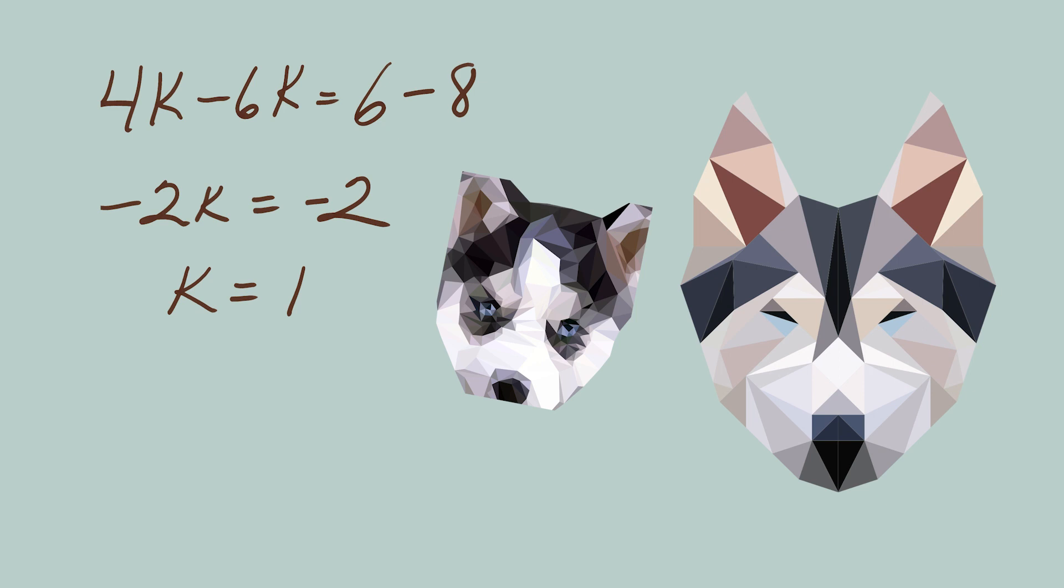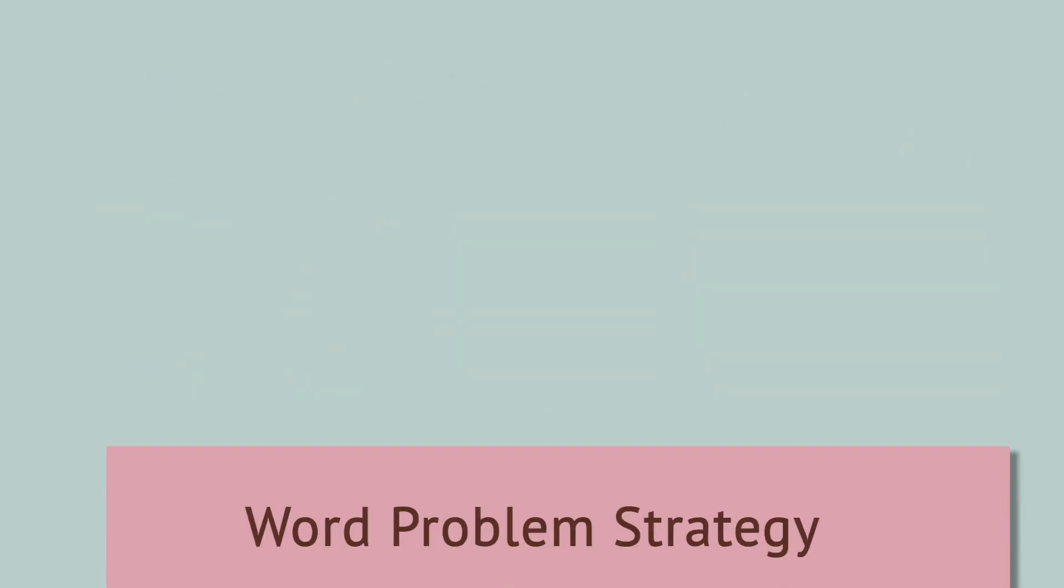We wrote this equation, S equals 2K, to say that Sherpa is twice as old. So, he's two years old. Let's check our work.